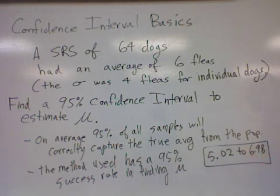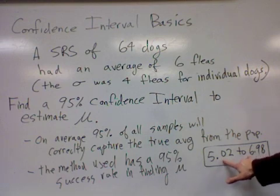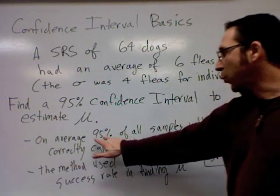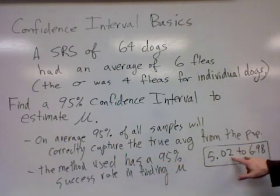And then here is just a brief overview of some things in terms of what it is saying. Saying that we are pretty confident that our answer is between 5 and 7 fleas on average per dog. If we wanted to get a more accurate answer, you would be actually less confident in the answer.